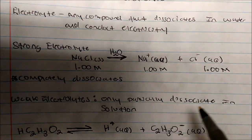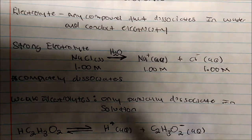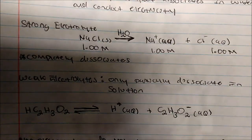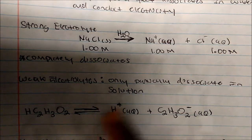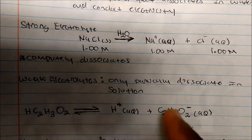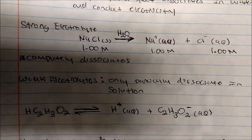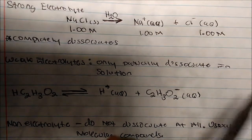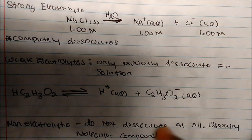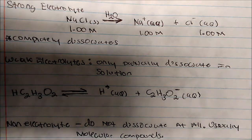Weak electrolytes only partially dissociate. So if I take acetic acid and put it in water, I'll actually get some H+ plus its conjugate base. A non-electrolyte usually does not dissociate at all, and they're usually just molecular compounds.